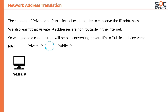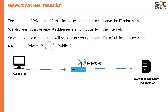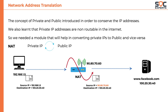Consider a computer with an IP address of 192.168.1.5 connected to the internet by a router bearing an IP address of 90.80.70.60. When the computer wants to communicate to a server on the internet, say facebook.com, the traffic initiated from the computer will hold the source IP address of 192.168.1.5. But when this traffic reaches the router, NATing happens and the source IP address will be replaced with the public IP address, that is 90.80.70.60. So when Facebook receives the request, it sees the request is coming from 90.80.70.60 and not from 192.168.1.5.